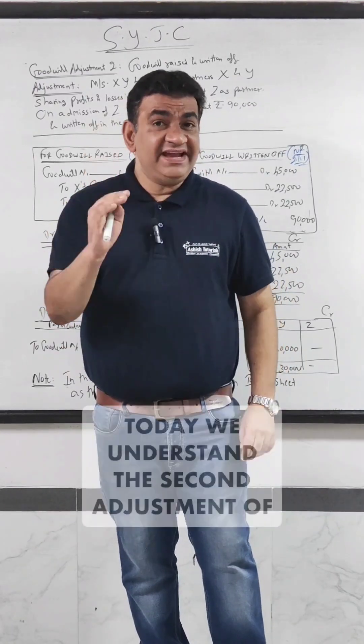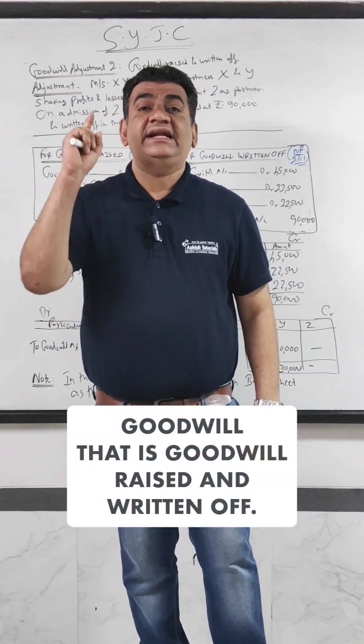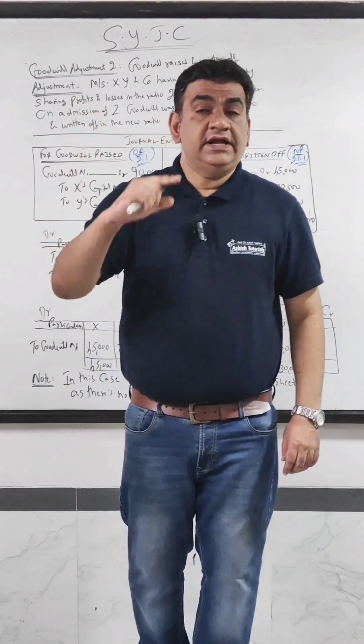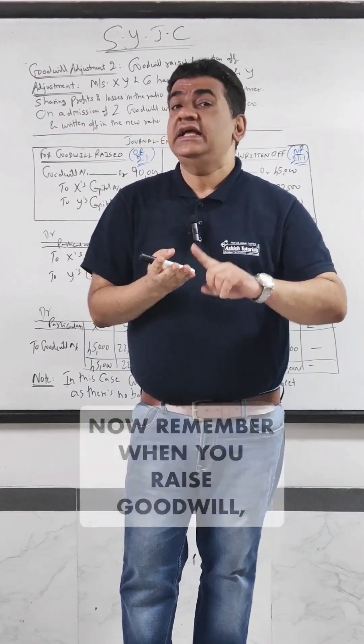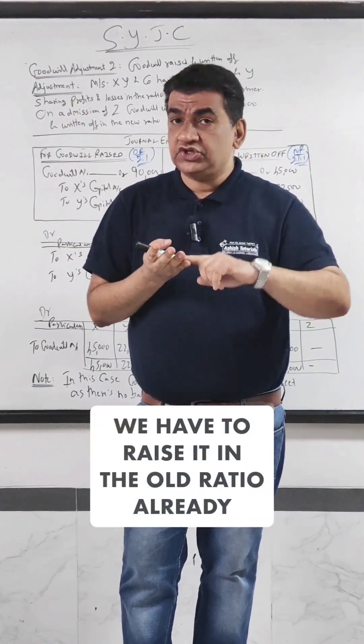Hi SYGC students, today we understand the second adjustment of goodwill that is goodwill raised and written off. Now remember when you raise goodwill, we have to raise it in the old ratio already discussed